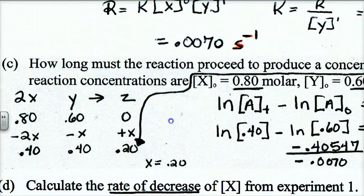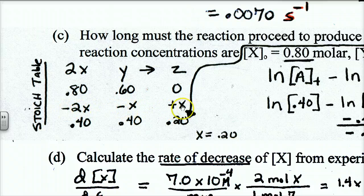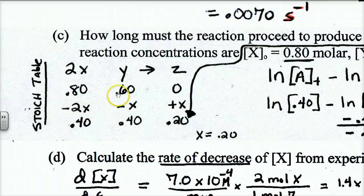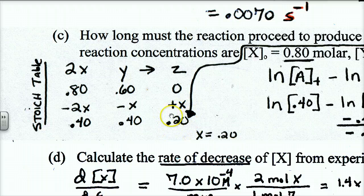Z zero is zero molar because you're starting from scratch. I built a stoichiometric ICE table — 2x, y, and z — which comes from the balanced chemical formula. That's important because we use it for stoichiometry and rate of decrease. Because of the stoichiometric relationship: minus 2x, minus y, and plus x for z. When z is 0.2, that plus x equals 0.2 since it started at zero. So if plus x is 0.2, then y change is minus 0.2 and x change is minus 2 times 0.2. The final concentration of y is 0.6 minus 0.2 = 0.4, and x is 0.8 minus 0.4 = 0.4.